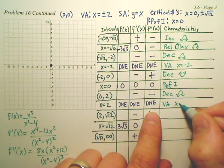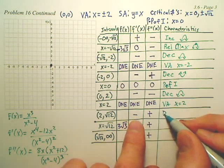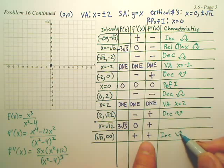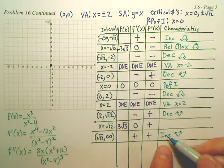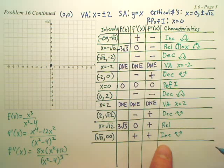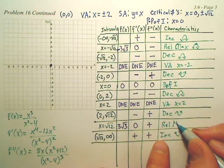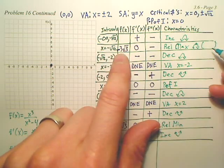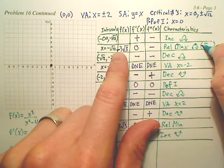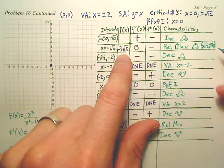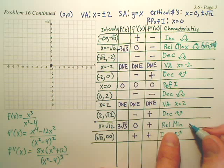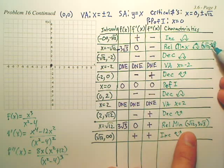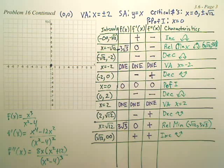Here's another vertical asymptote at x equals 2. For the interval after the asymptote, it's decreasing and concave up — happy — and then we get increasing and concave up, so if it goes from decreasing to increasing that's a relative minimum. The coordinate for the relative max is negative square root 12, comma negative 3 square root 3. And the relative min is square root 12, comma 3 square root 3. Those are the coordinates, which aren't pretty.